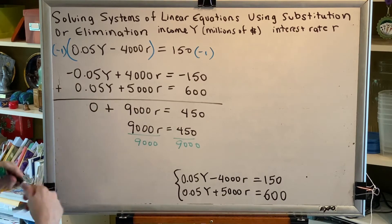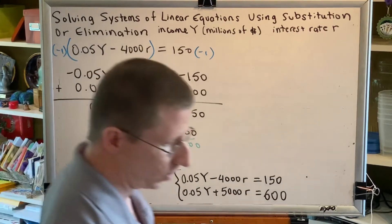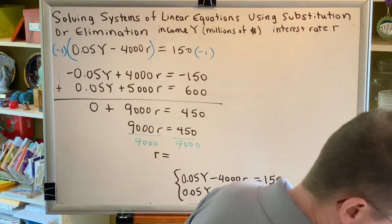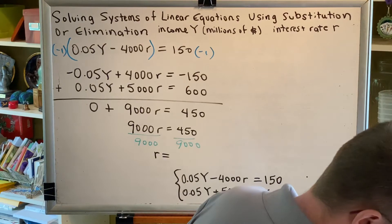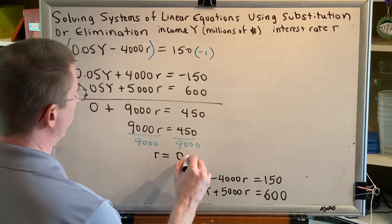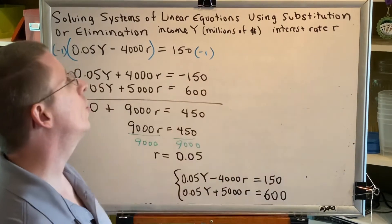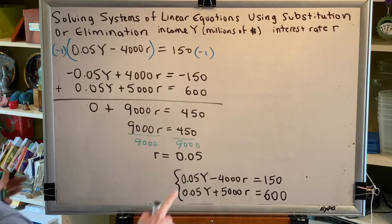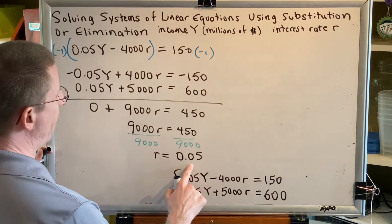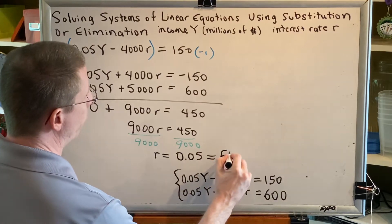And we get R is equal to, I'll use a calculator for this division, 450 divided by 9000 is 0.05. Now remember, R represents an interest rate, and interest rates are described as percents. So we multiply this by 100, and then put the percent symbol after it, we get 5%.